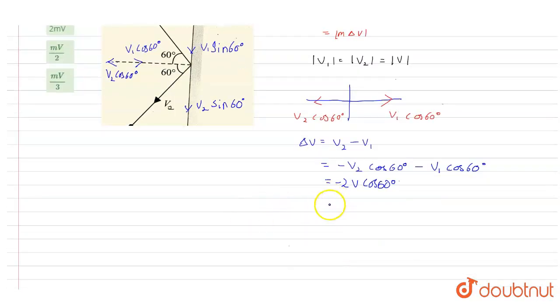So this will come out to be minus v. Basically, change in velocity is delta v.